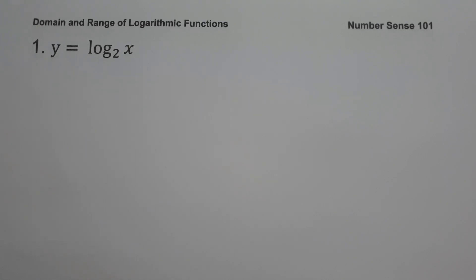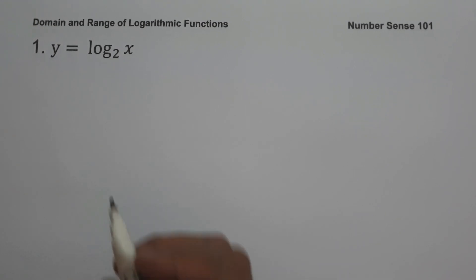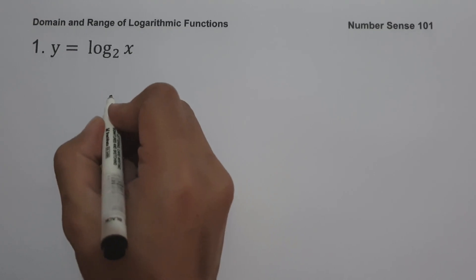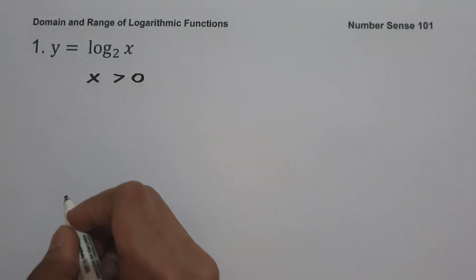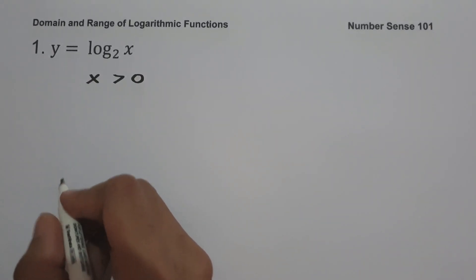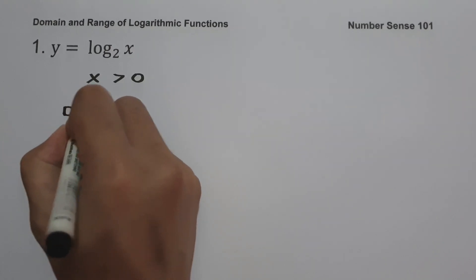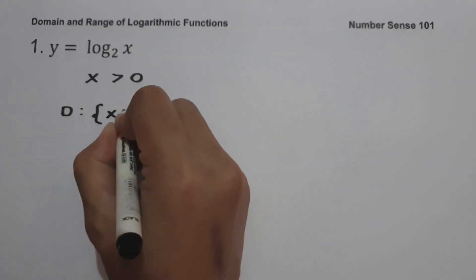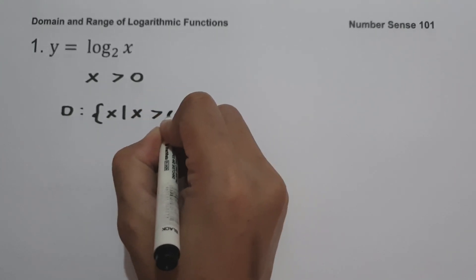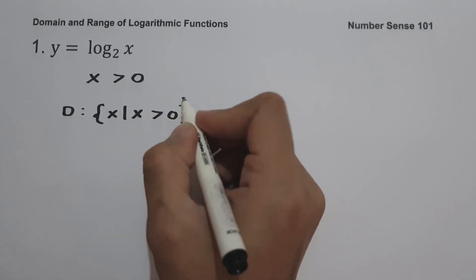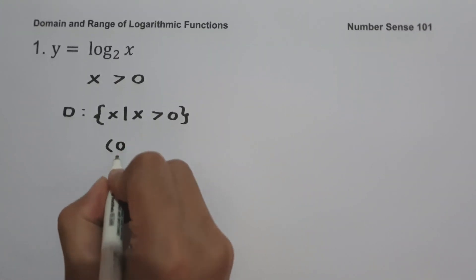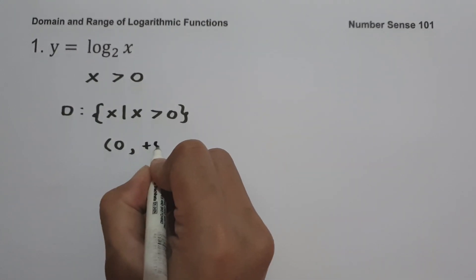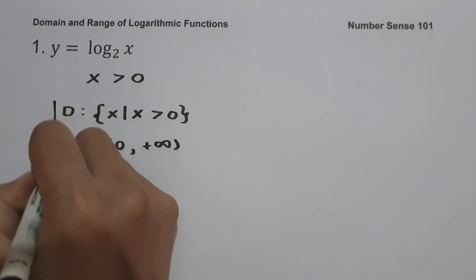How can we find the domain and range of the given function? To find the domain, let us equate our argument greater than zero, so we have x greater than zero. To write our domain in set builder notation: the domain is the set of x values such that x is greater than zero. In interval notation, we start from zero (not included) up to positive infinity. This will be our domain.